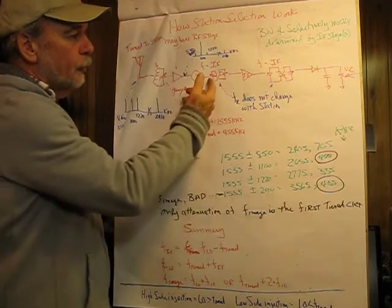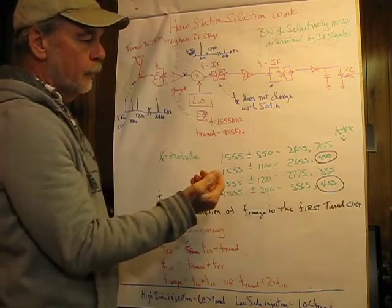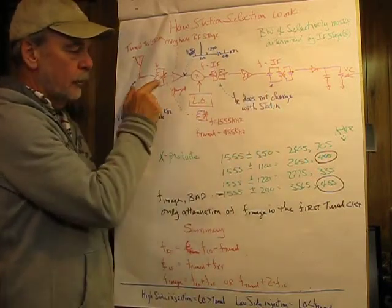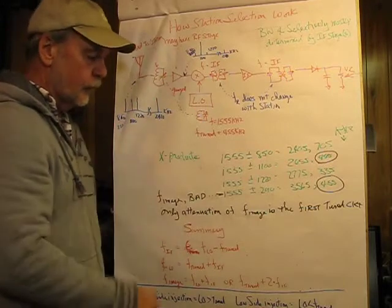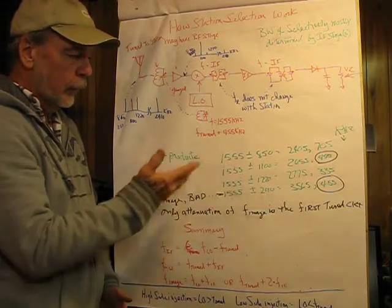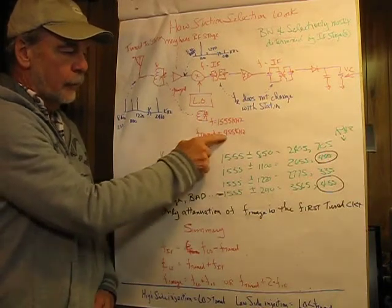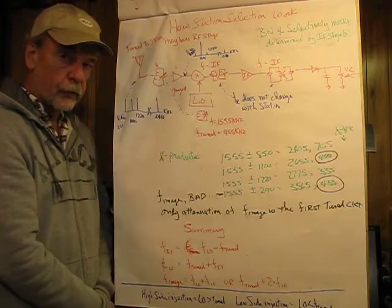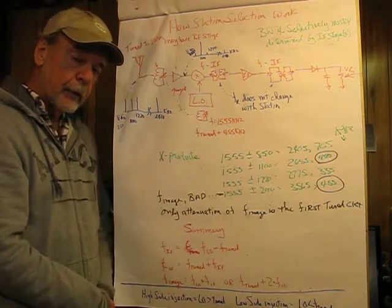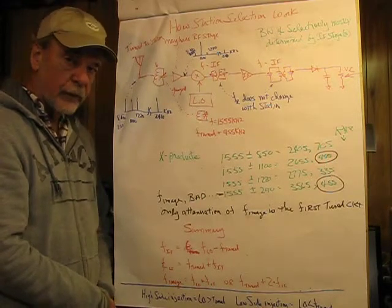So, this goes through the IF stage, and that's going to be 455 kHz. And, like I said, these do not change with the station. Only this and this tune in the station. So, now, and this is also, while I'm here, called high-side injection, because the local oscillator is 455 kHz, in this case, above the desired frequency. In FM, a typical intermediate frequency is 10.7 MHz.